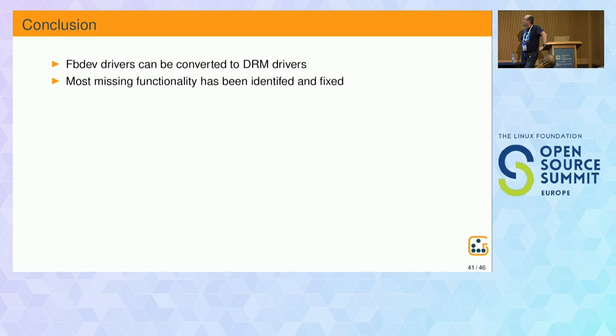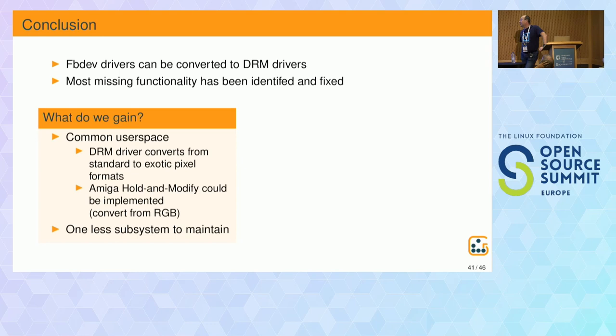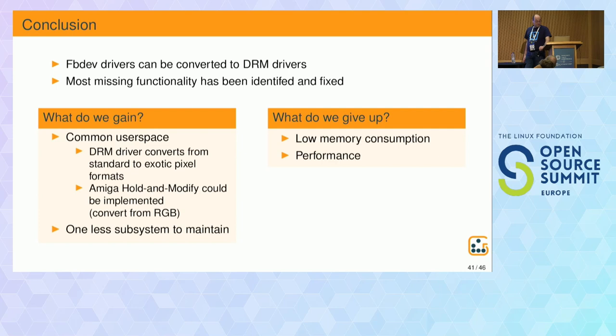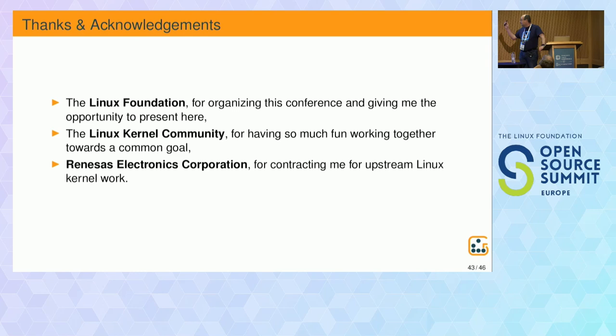In conclusion, I think we can convert fbdev drivers to DRM drivers. I've identified most of the missing functionality and sent patches to handle it. What do we gain? The most important thing is a common user space API — no need to care about bit planes versus packed pixels or whatever strange format your hardware uses. We could finally implement support for the old Amiga hold-and-modify mode. Perhaps we can get rid of fbdev entirely and have fewer subsystems to maintain. What we give up is mostly low memory consumption and performance.